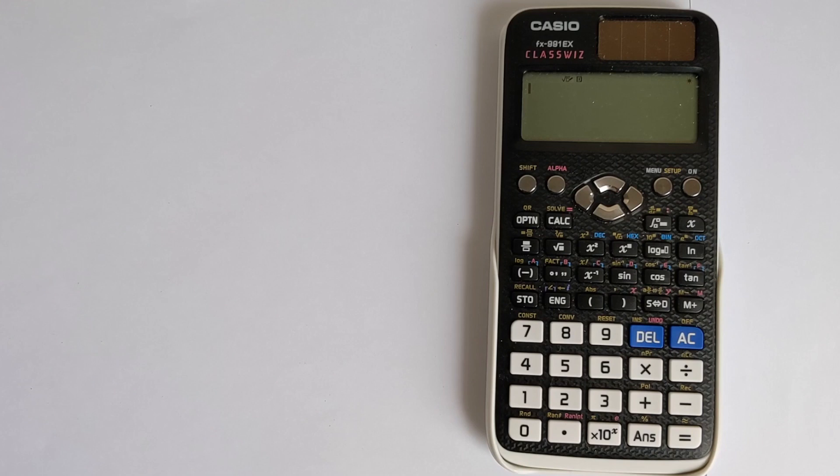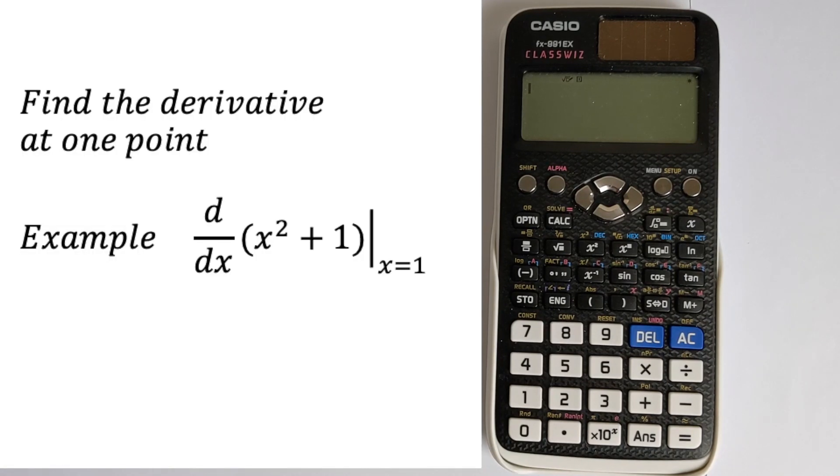So let's start by looking at how to find the derivative at a point. Say we want to find the derivative of x squared plus 1 and evaluate it at the point x equals 1.